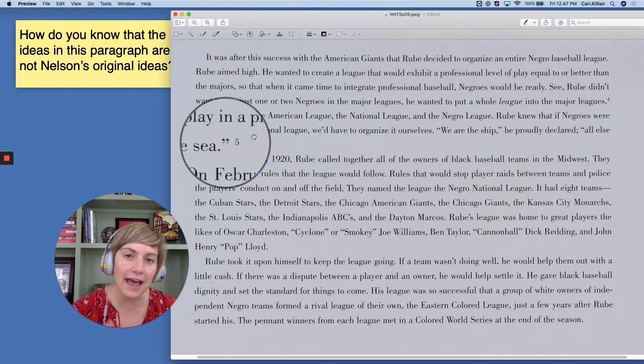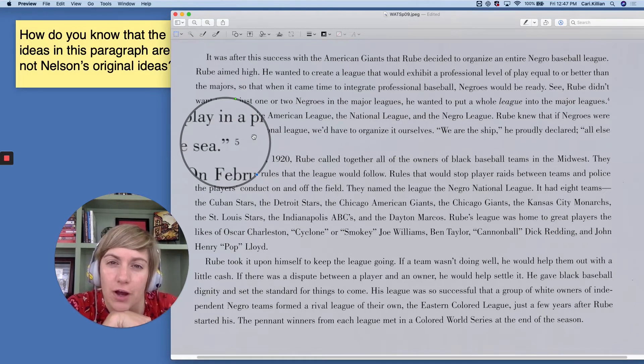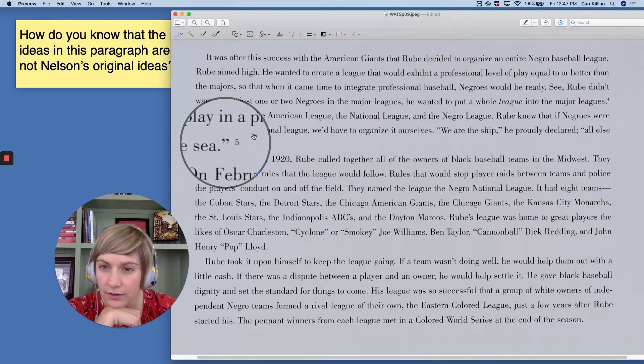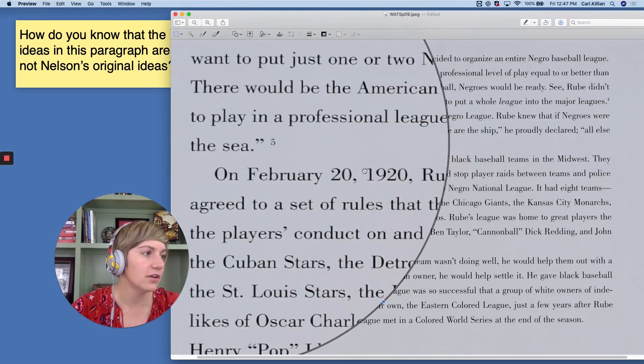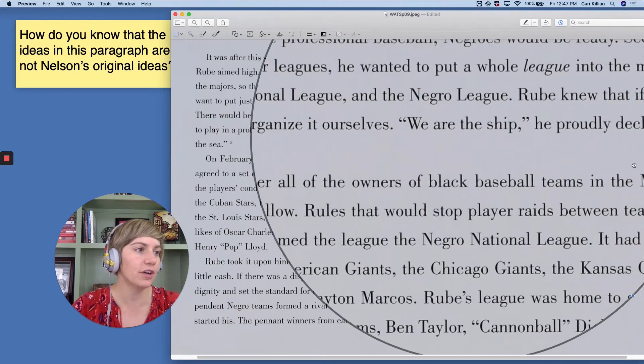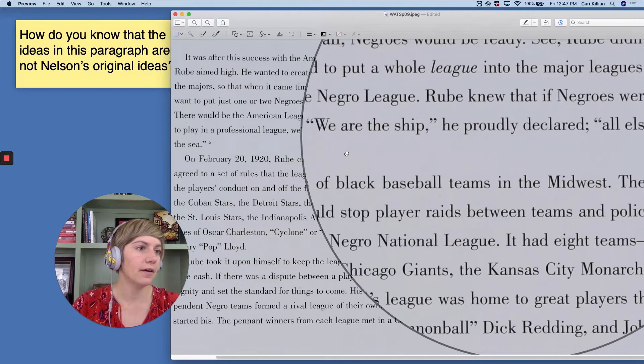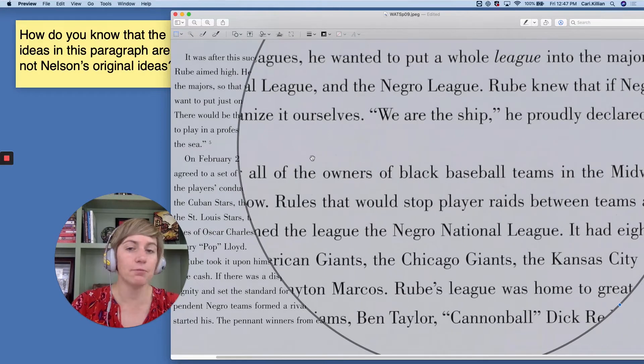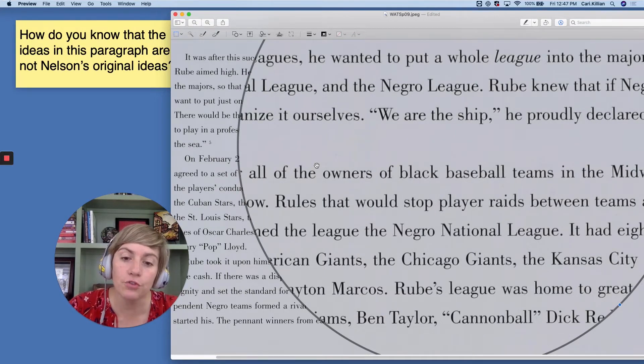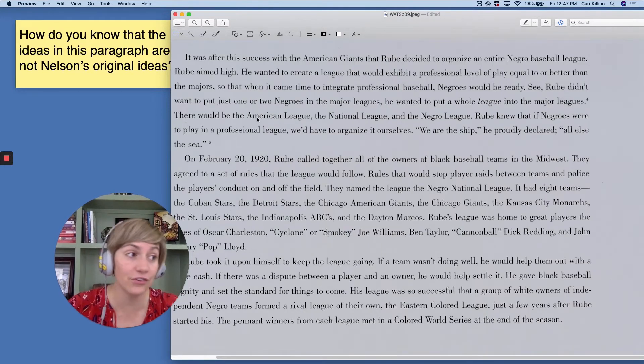There's an endnote right over here that says four, and then there's an endnote right over here that says five. That's showing that it's someone else's original ideas. Now, what else could have helped you come to a conclusion? Did you also notice the quotations?